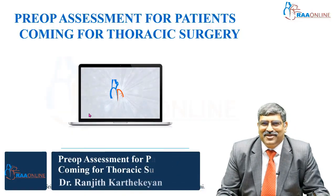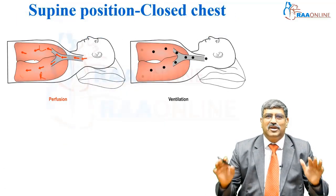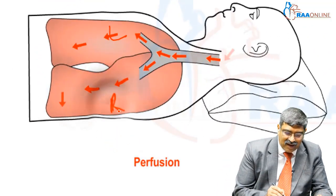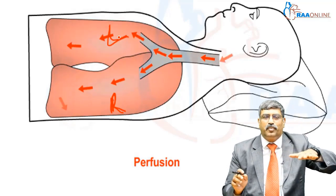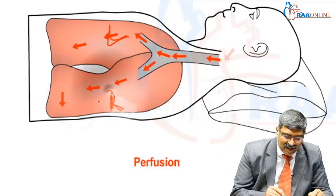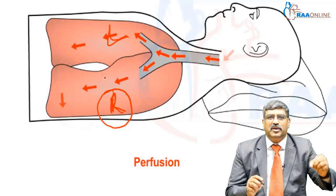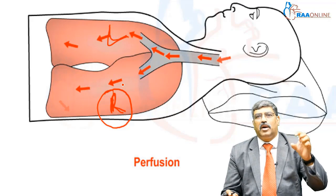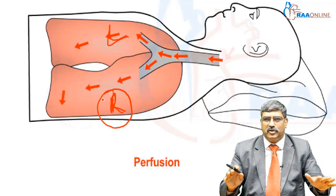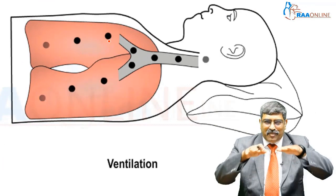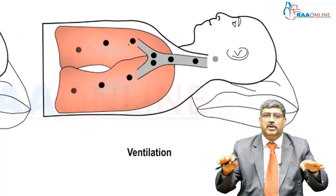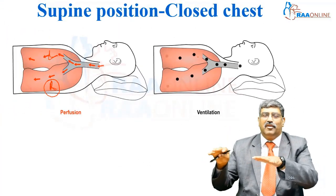Welcome to RAW Online. Now coming into the most important part where anesthesiologists play a major role. This is the right lung and this is the left lung. In supine position, there is no dependent and non-dependent — both are at equal level. The right lung being slightly bigger will receive a little more pulmonary perfusion. The red arrow marks represent pulmonary perfusion. Most of the time, the right and left lung receive equal perfusion. The black marks represent ventilation — in supine, the right and left lung receive equal ventilation, so there is no mismatch.